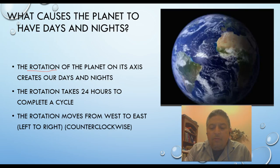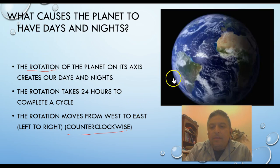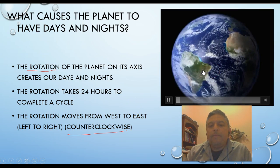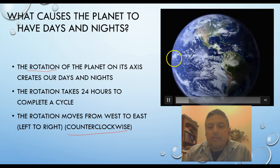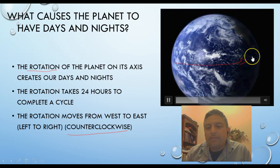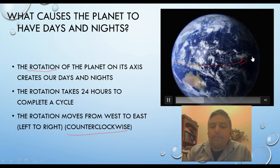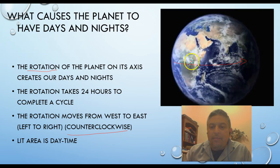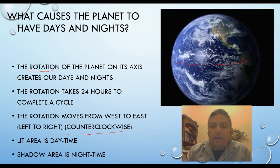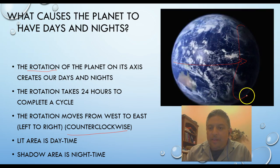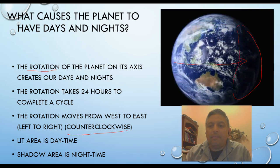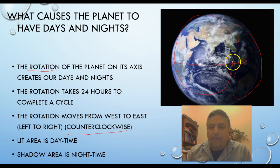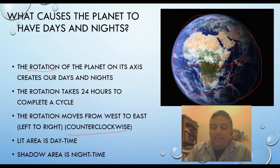The rotation moves from west to east — left to right, or counterclockwise. Keep this in mind because we're going to mention it a lot. Let me play the video so you can look at it. Notice how the movement is going from left to right. The area that is getting sunlight is what is going to be daytime, and all the area on the side that is under shadow is going to be nighttime. So this section over here on the back is nighttime.